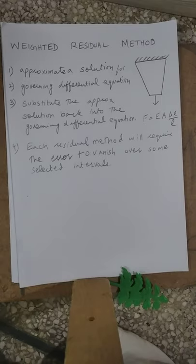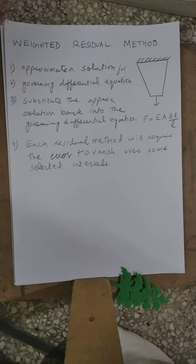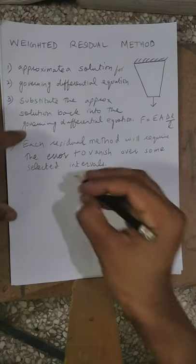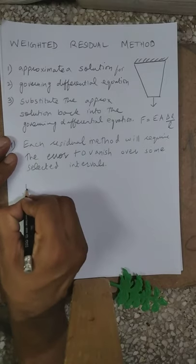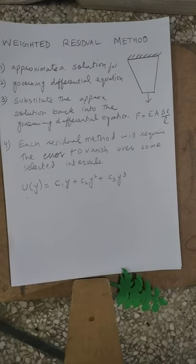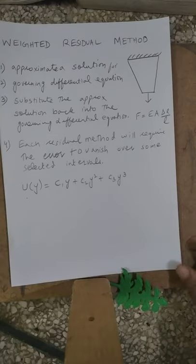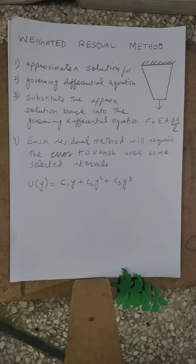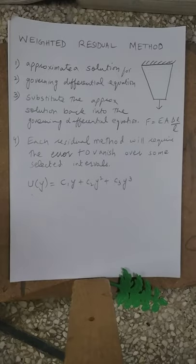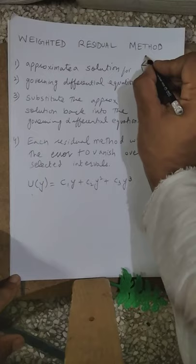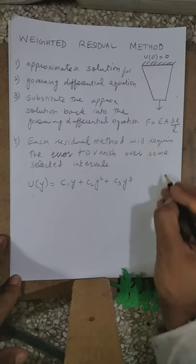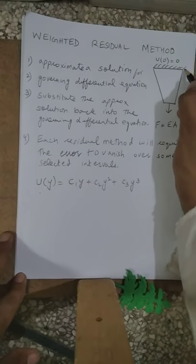In the fourth step, each residual method requires the error to vanish over some selected intervals. There are different types of methods: sub-domain method, collocation method, Galerkin's method, and least squares method. We will have a better understanding of all four steps when we work through the problem. Let's start with Step 1 — approximate a solution. For example, we approximate u(y) = c₁y + c₂y² + c₃y³.